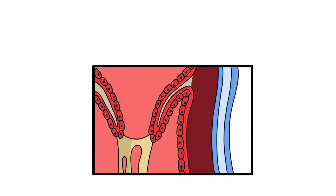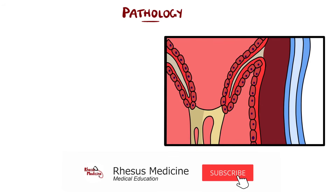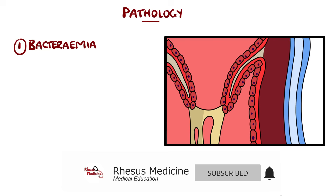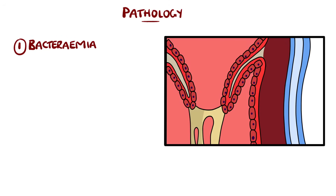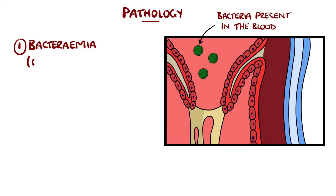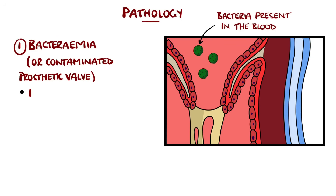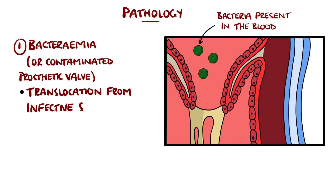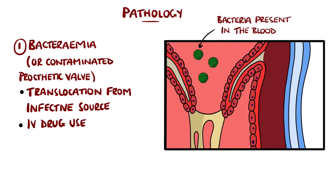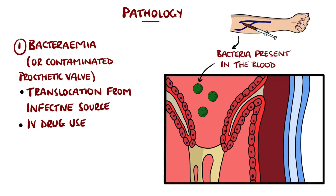For infectious endocarditis to develop, there needs to be the presence of a bacterial infection in the blood, termed bacteremia. There are rare exceptions, such as a contaminated prosthetic valve being installed. Bacteremia can come from the transition of bacteria from another infection site into the blood, introduction via intravenous drug use, and from procedures like dental procedures.